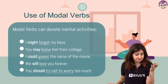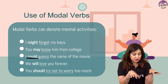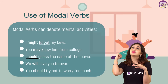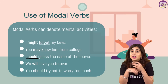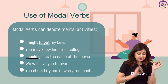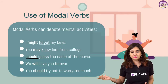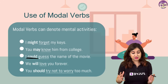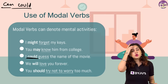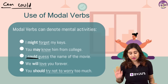May and might are generally interchangeable - 'you might know him from college' also works. 'I could guess the name of the movie.' Could can talk about ability in the past - 'I could run really fast when I was a child.' But here, could is also talking about possibility - that it's possible I'll be able to guess the name of the movie. So can and could both talk about ability but can also talk about possibility, depending on how they are used in a sentence.